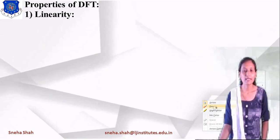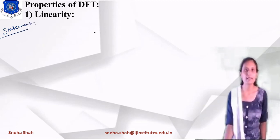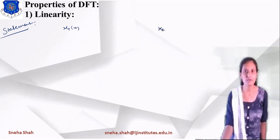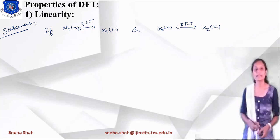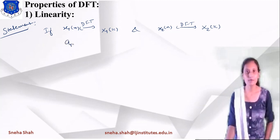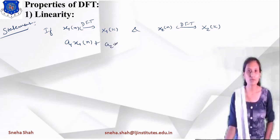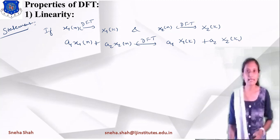For defining any property, we start with the statement. So what is the statement for the linearity property? Suppose if I am taking two signals x1(n) and x2(n) and finding the DFT of them, they will convert into X1(k) and X2(k). Linearity property means it follows the superposition principle. In the time domain, if I take a1·x1(n) + a2·x2(n), then in the frequency domain it gives a1·X1(k) + a2·X2(k). This is the statement of the linearity property.